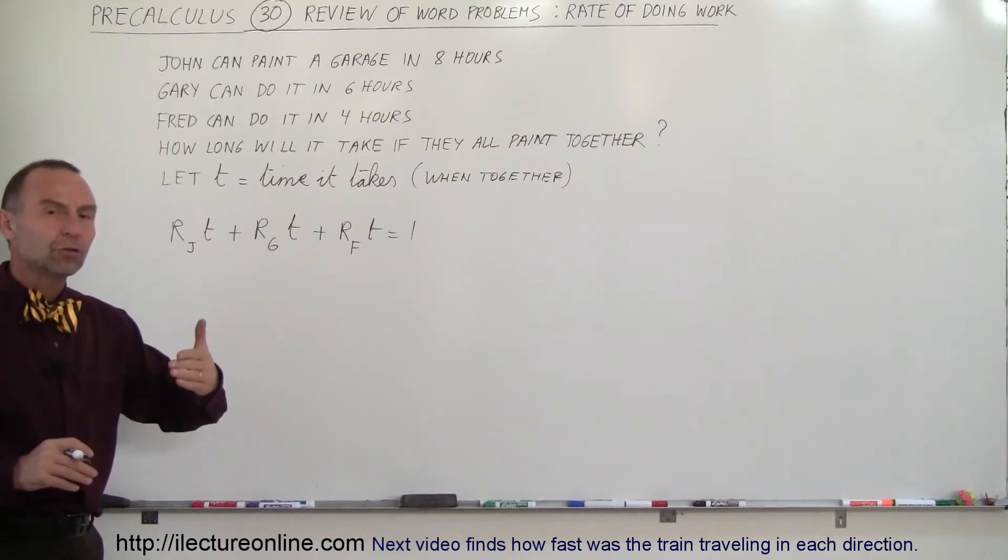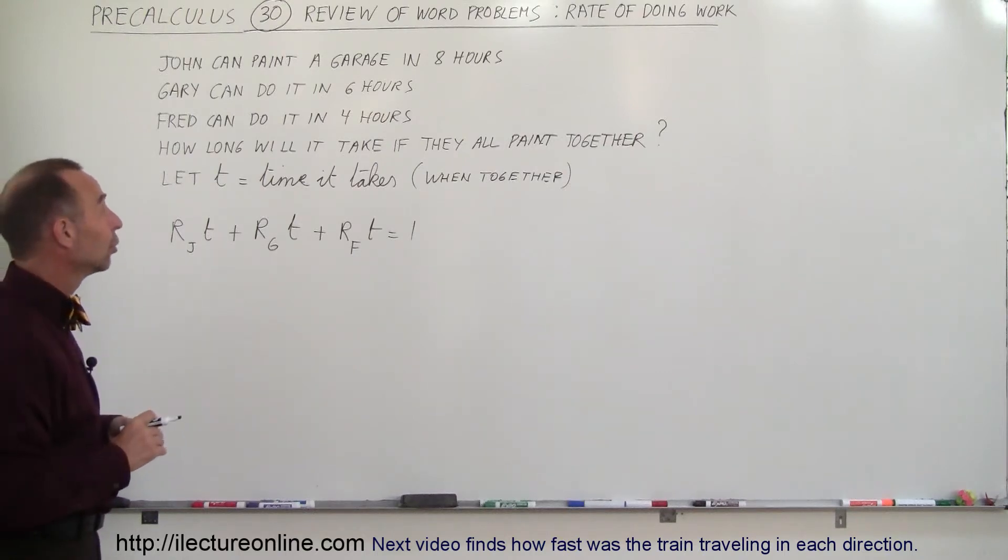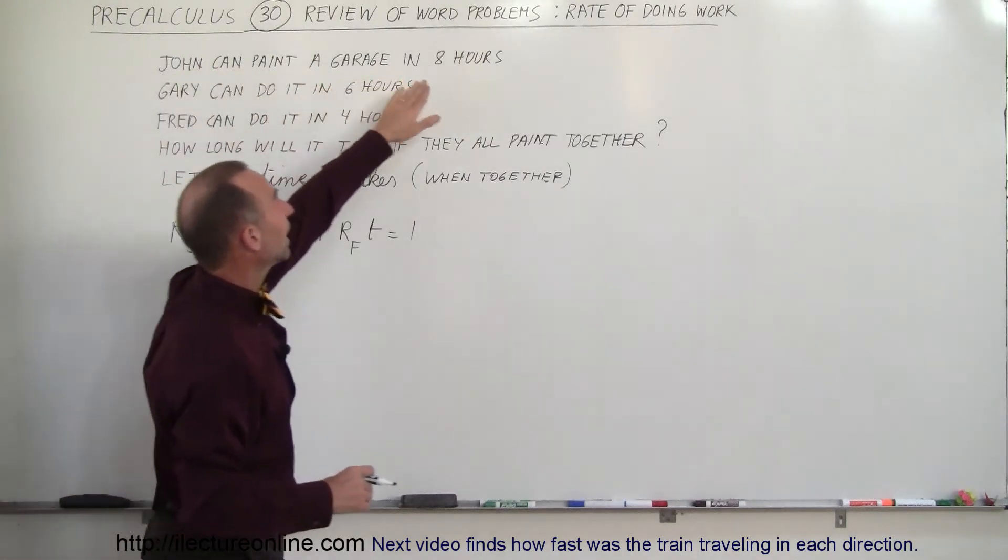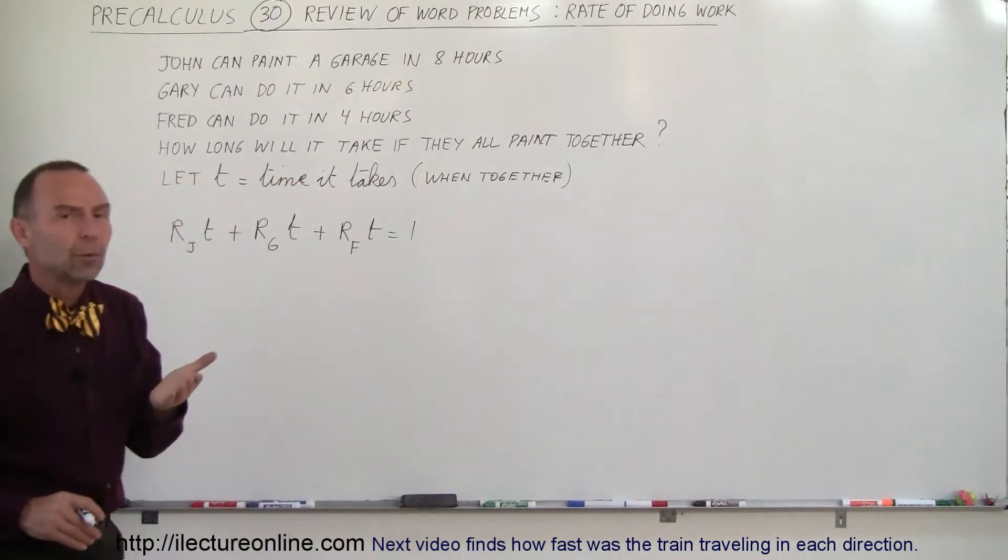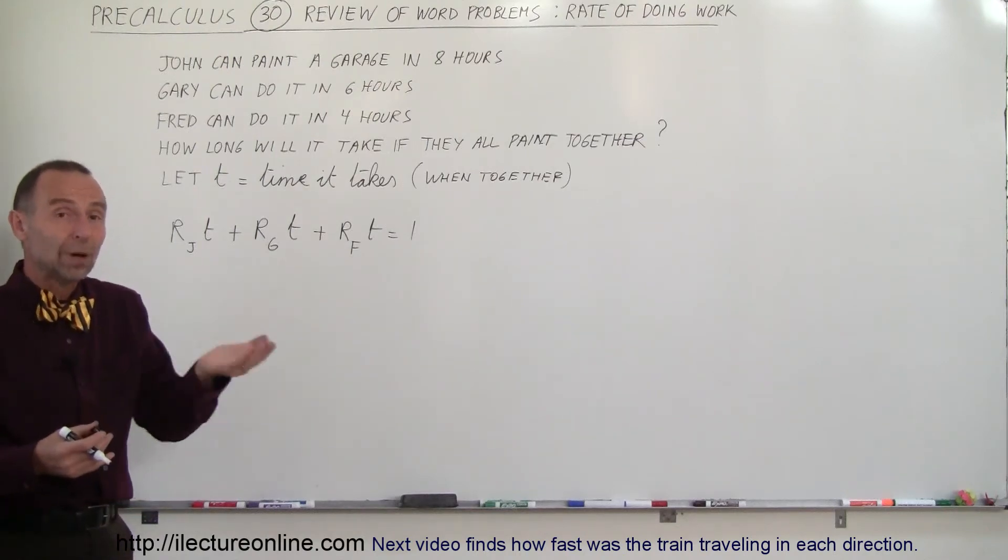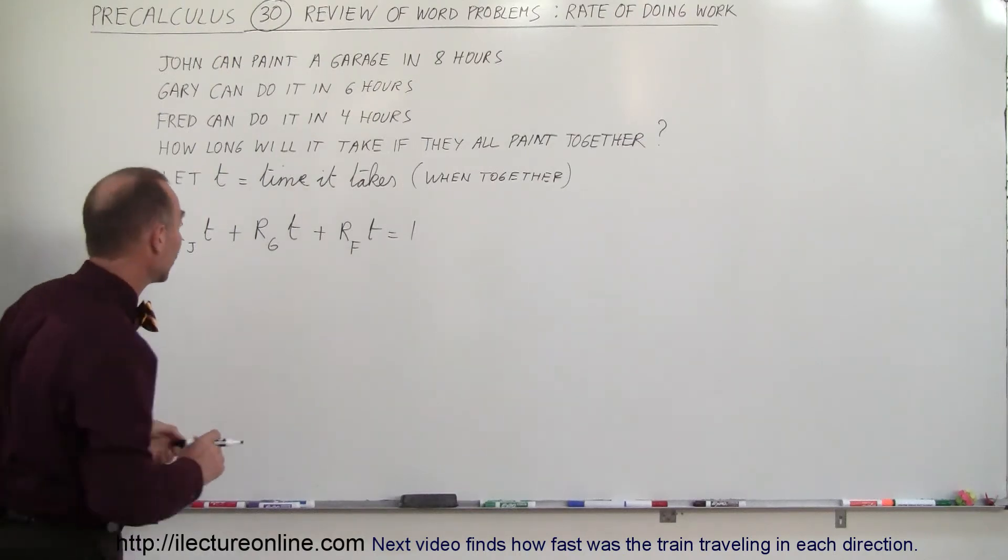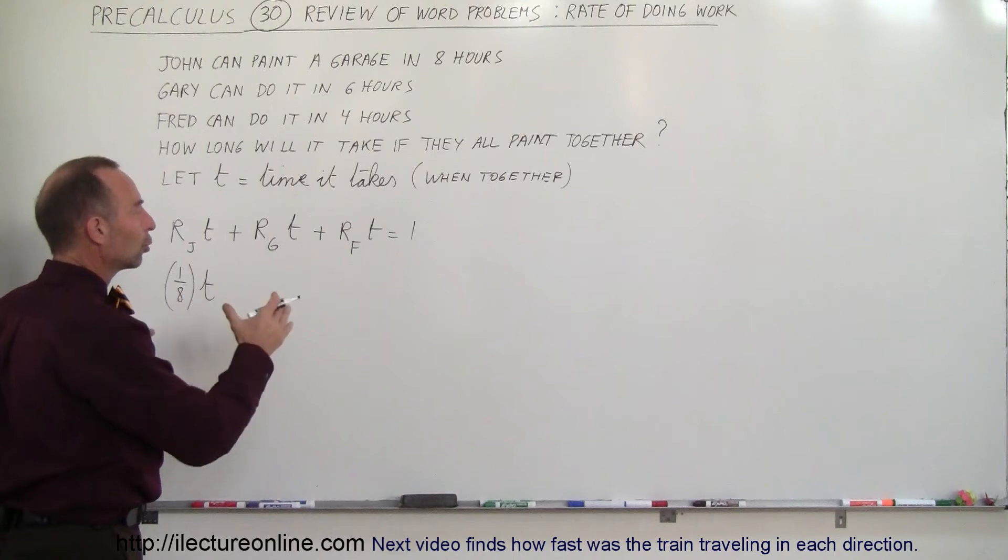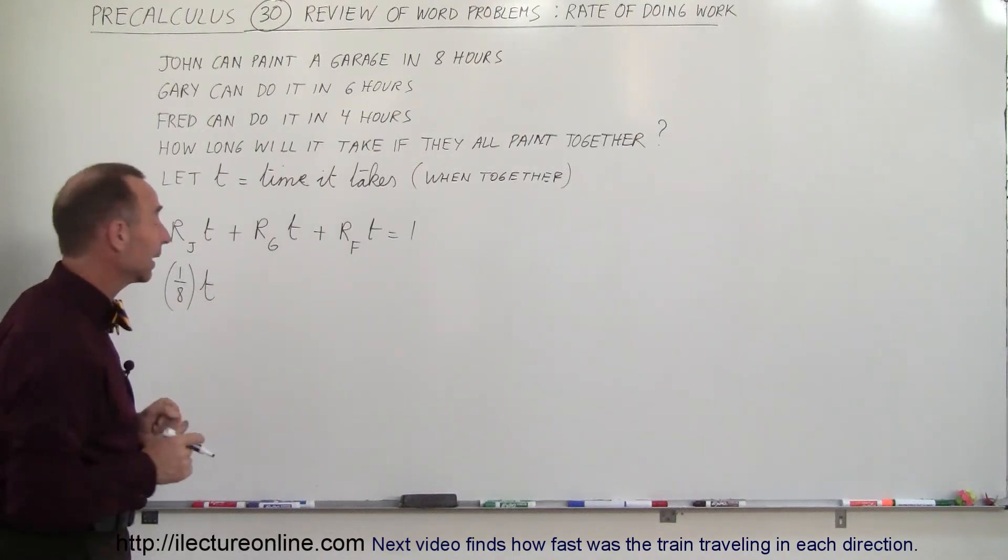Well, the rate is the inverse of the total time that it takes for them to paint the garage, which means if John can paint a garage in eight hours, then each hour he gets one-eighth of the garage done. So his rate of painting is one-eighth of a garage for every hour. So the rate for John would be one-eighth. It would multiply times the total time that it takes for the whole garage to be done when they all three paint on it.